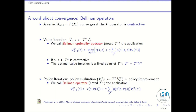To define policy iteration mathematically, you need a different operator called the Bellman operator (not the Bellman optimality operator). The difference is that the optimality operator includes a max over actions, whereas the Bellman operator does not. With the Bellman operator you can compute the value function for a particular policy. Combining policy evaluation using the Bellman operator with policy improvement via steepest gradient ascent, you can prove that the algorithm converges to optimal value functions and then to optimal policies.